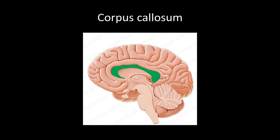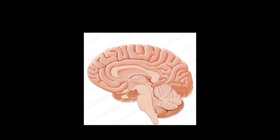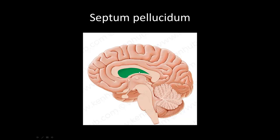Next we have the corpus callosum, which is just deep to the cingulate gyrus. The corpus callosum is a white matter structure connecting the right and left cerebral hemispheres. This next structure highlighted in green is the septum pellucidum, which is a bilayer structure separating the lateral ventricles.